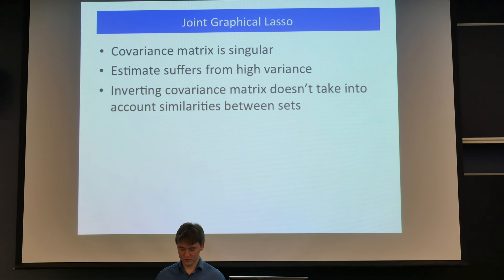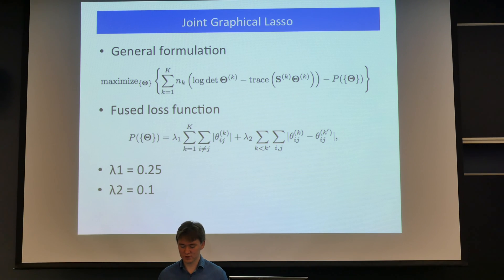And we use joint graphical lasso to build these networks, which takes into account these similarities and avoids problems with singular covariance matrix.